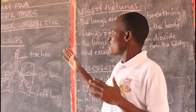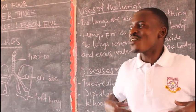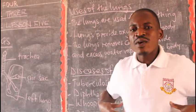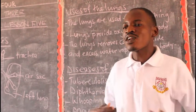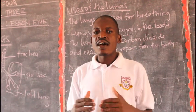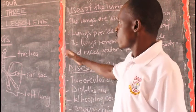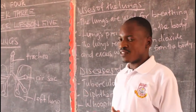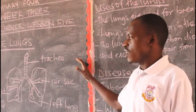These lungs are protected by the rib cage. This is our rib cage. When you touch this part here, you find this bone here, what we call the rib cage. So the rib cage protects the lungs. On our diagram here, we have our lungs — here is the diagram of the lungs.